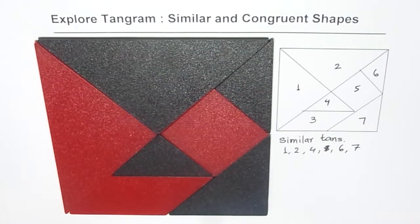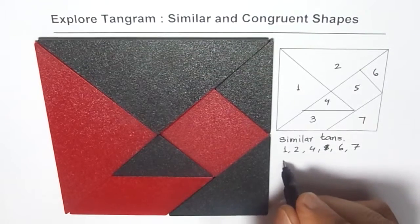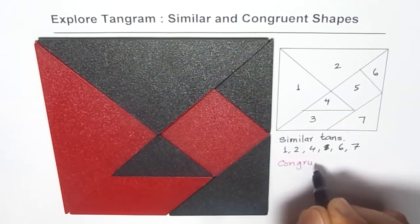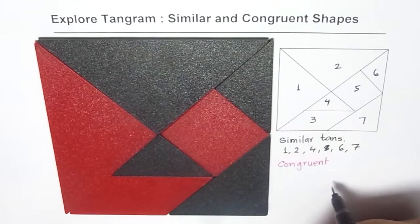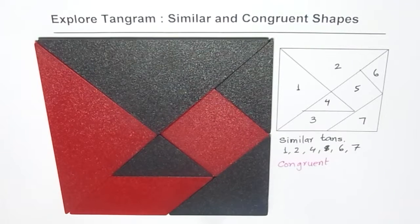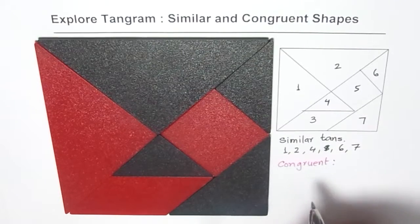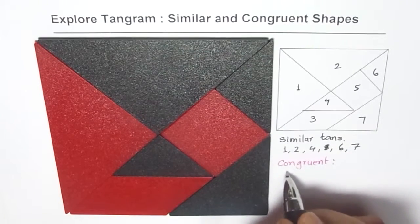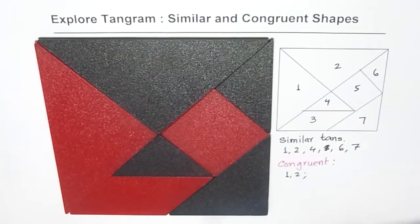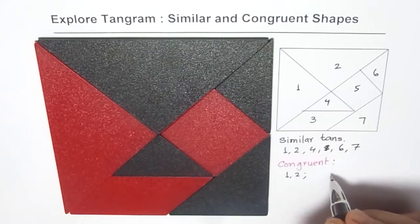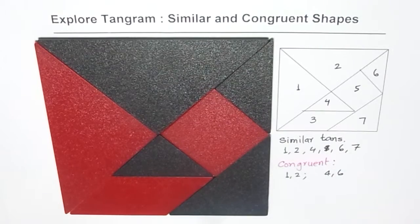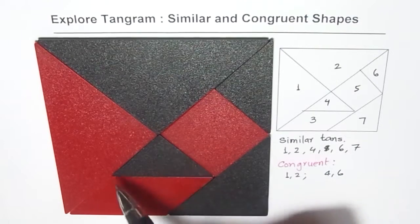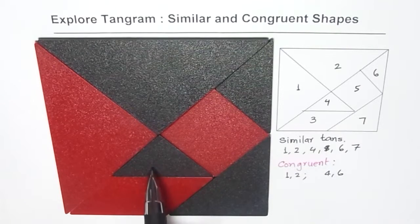When we talk about congruent shapes, congruent means that both size and shape are the same. So which ones are congruent? Let us identify the congruent tans. One and two are congruent — that is one set. Then four and six are congruent. These two triangles are the same; if I put one over the other, it will totally overlap. So they have exactly the same shape and size — that is called congruent.